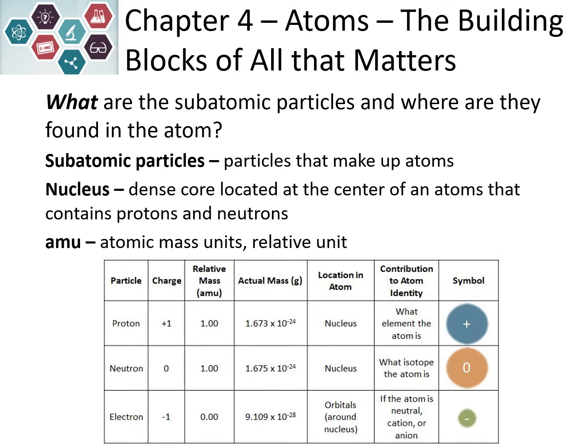Protons and neutrons are located in the nucleus of the atom. Protons have a positive one charge — we usually represent them with a plus sign. That helps to tell us what type of element the atom is; if we change the number of protons, we change the type of element. Their mass is much easier to refer to as one atomic mass unit.